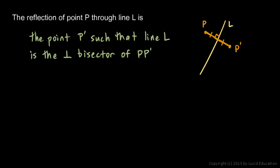Let me add one other thing. If point P were on line L, then we would say the reflection of point P through line L is simply point P itself. You can see that if we go from point P to the line, we go zero distance, so P prime — the reflection of P — is just that very same point. We don't even think of this as a reflection in the everyday sense, because we don't get a new point. We mention it now just to be thorough.